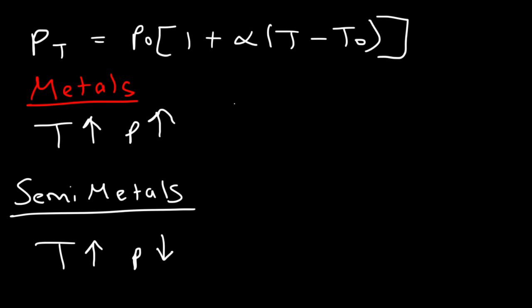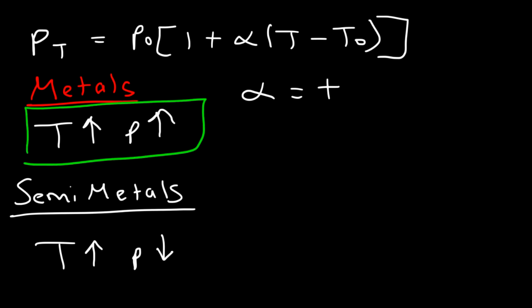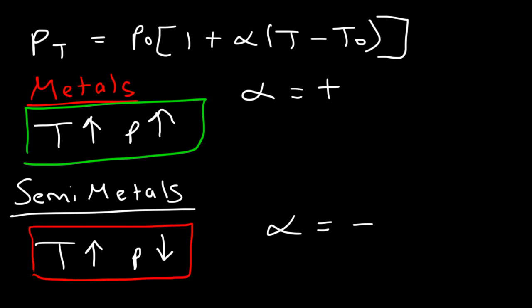Metals have a positive temperature coefficient, so alpha is positive. Because alpha is positive for metals, temperature and resistivity are directly related — if you increase the temperature, the resistivity goes up. For semiconductors, they have a negative temperature coefficient, indicating an inverse relationship: as you increase the temperature, the resistivity goes down. So semiconductors are more conductive at high temperatures, but metals are less conductive at high temperatures.